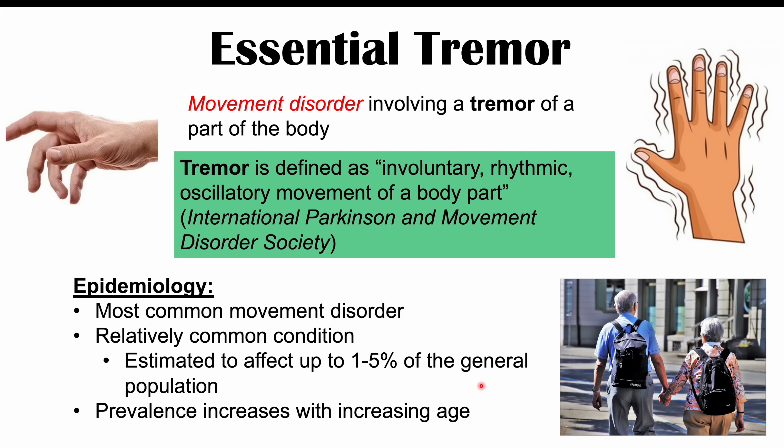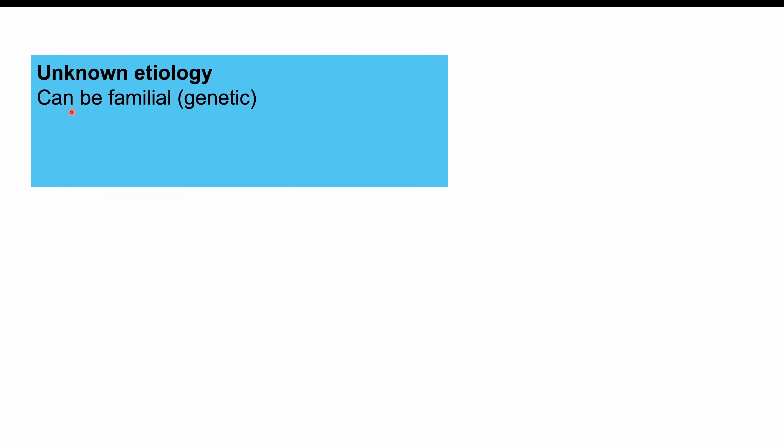As patients get older, especially after the age of 60, their chances of getting essential tremor increase, and prevalence increases especially after age 60. The underlying etiology or cause of this condition is not known. It is known, however, that there is a familial connection, suggesting likely genetic involvement.